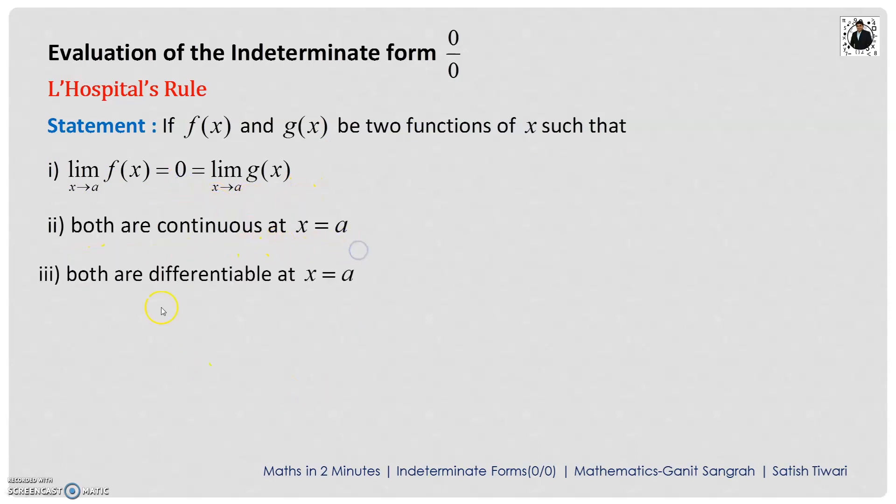Both are continuous at x equals to a, both are differentiable at x equals to a, and the derivative of f of x and g of x, that is f dash of x and g dash of x, are continuous at x equals to a. Then we can write limit extending to a f of x upon g of x as which will be equals to the limit extending to a f dash of x upon g dash of x, provided that g dash of a is not equals to 0.